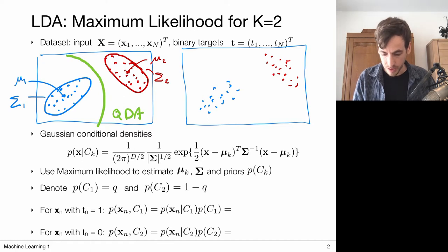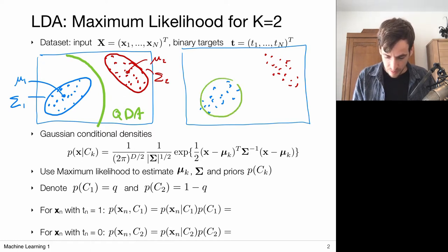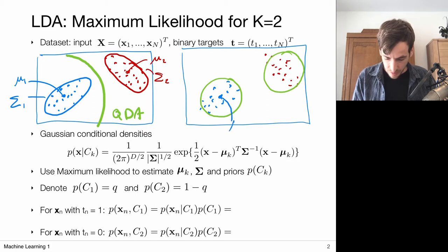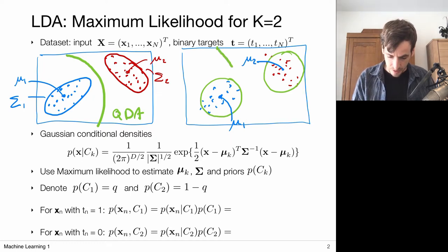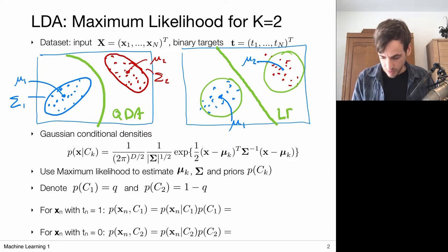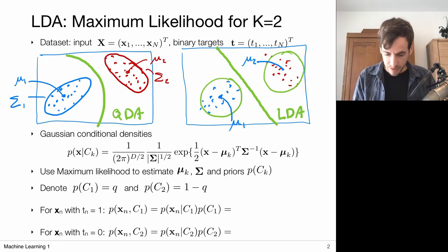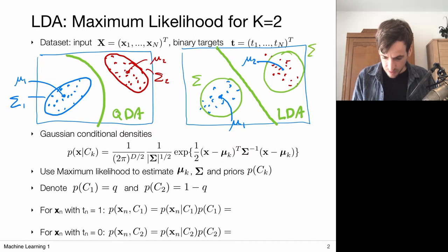We're going to assume that both conditionals share the same covariance matrix, but each distribution has its own mean parameter mu_1 and mu_2. If we do it this way, it turns out that in the end we obtain a linear decision boundary, and so we call this framework linear discriminant analysis. In this setting, both distributions share the same covariance matrix, capital sigma.